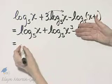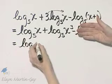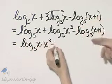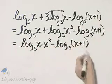just looking at the first two terms, this is log base 5 of x times x cubed, and then minus log base 5 of x plus 1.